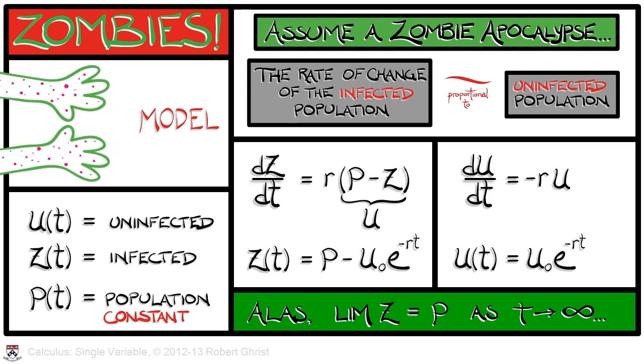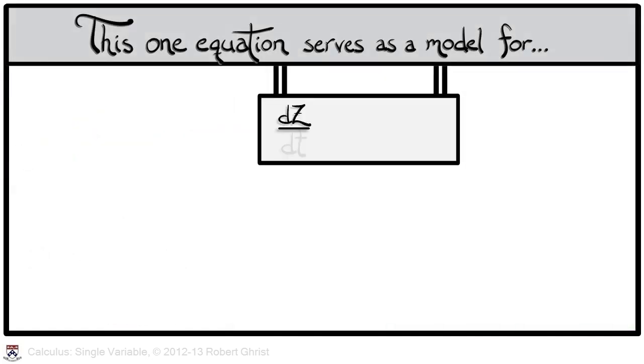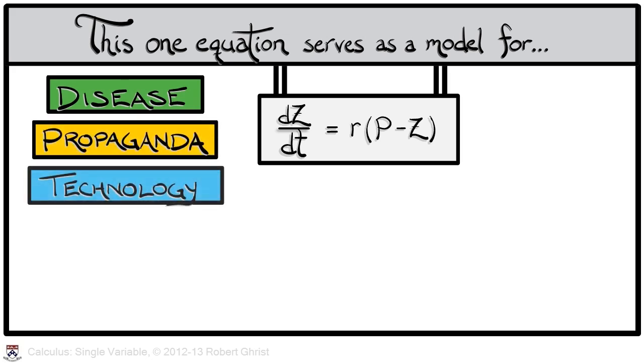Unfortunately, as t goes to infinity, this means that everyone is a zombie. Now, before you dismiss this differential equation as being ridiculous for modeling zombies, consider it may also be used to model the spread of disease or spread of propaganda or the adoption of new technology in a population. This simplistic equation is not rich enough to really model these complex phenomena, but it's a good first approximation.